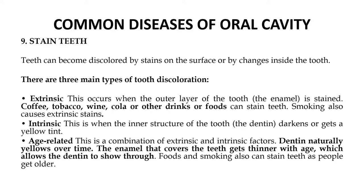Dentin naturally yellows over time as age progresses. The enamel that covers the teeth gets thinner with age. When the enamel gets thinner, the dentin part becomes more visible, which allows the dentin to show through. Food and smoking are also contributing factors to the staining of teeth as people get older.